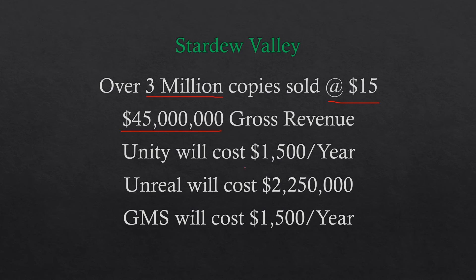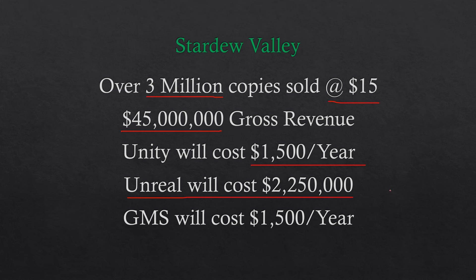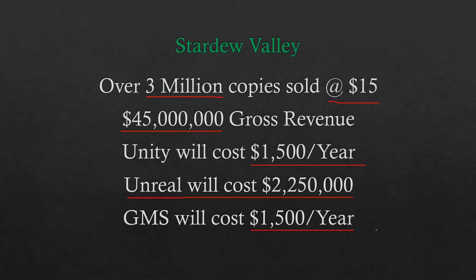At Stardew Valley scale, Unity would cost $1,500 a year — not too bad. Unreal, on the other hand, and this is why I think it's deceptive, would end up costing $2.25 million over the course of its life. That 5% really starts adding up. You'll have the money to pay it since it only comes due as your game does well, but that's obviously a lot more. GMS would be $1,500 a year since Stardew is on every major platform. Unity and GMS come out on top if you want to publish everywhere.